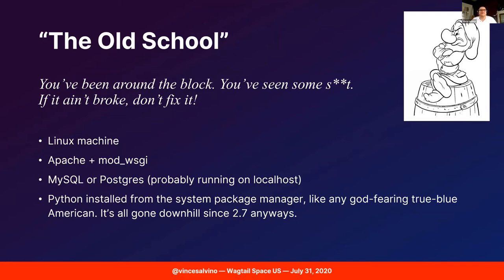The first is the old school approach — if it ain't broke, don't fix it. This is your standard LAMP stack: a Linux machine, maybe Apache or Nginx with mod WSGI, MySQL or Postgres probably running on localhost, Python installed from the system package manager. This way works great. You can throw this up on a five-dollar Digital Ocean box and it'll get the job done for a small site.